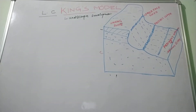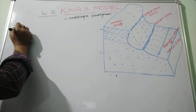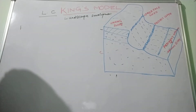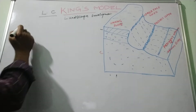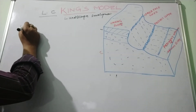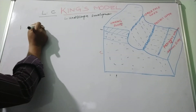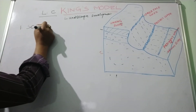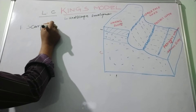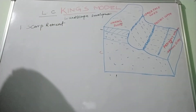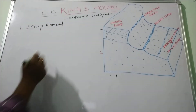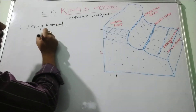The first assumption of King's model is that pediplanation is performed by two twin processes. One is the scarp retreat rate and the second one is pedimentation.